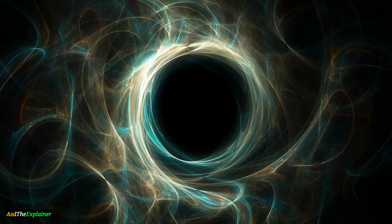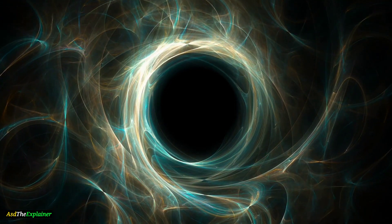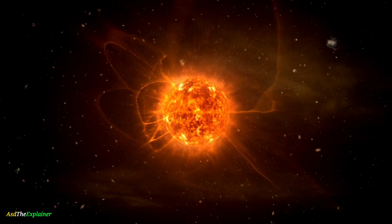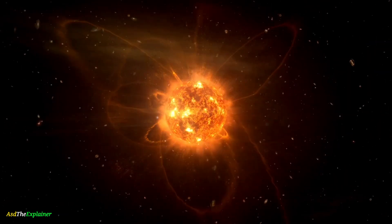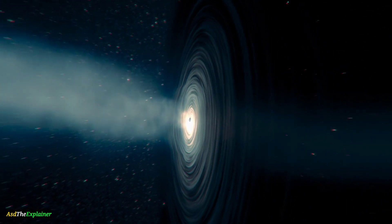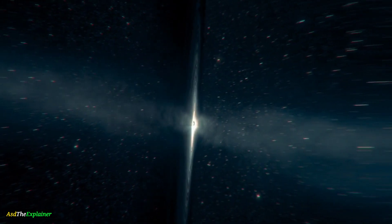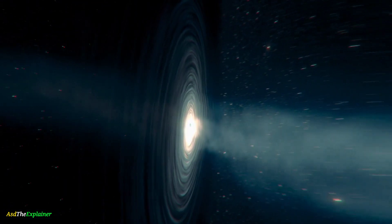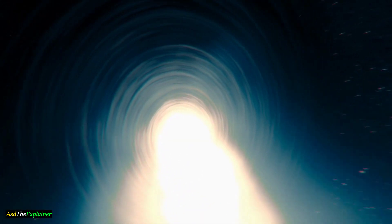To understand what scientists have discovered inside a black hole, we first need to understand what a black hole is. Black holes are formed when a massive star collapses in on itself, creating an object so dense that its gravitational pull is strong enough to warp the fabric of space and time. The point of no return around a black hole is called the event horizon, beyond which nothing can escape. At the center of a black hole lies the singularity, a point of infinite density where the laws of physics as we know them break down.